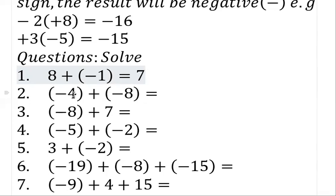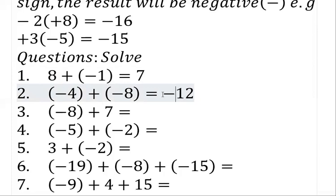If you are adding numbers of the same sign: minus four plus minus eight — just add them and take the sign. Four plus eight gives twelve, and just take the sign. They are both having the same sign, so the answer is minus twelve.